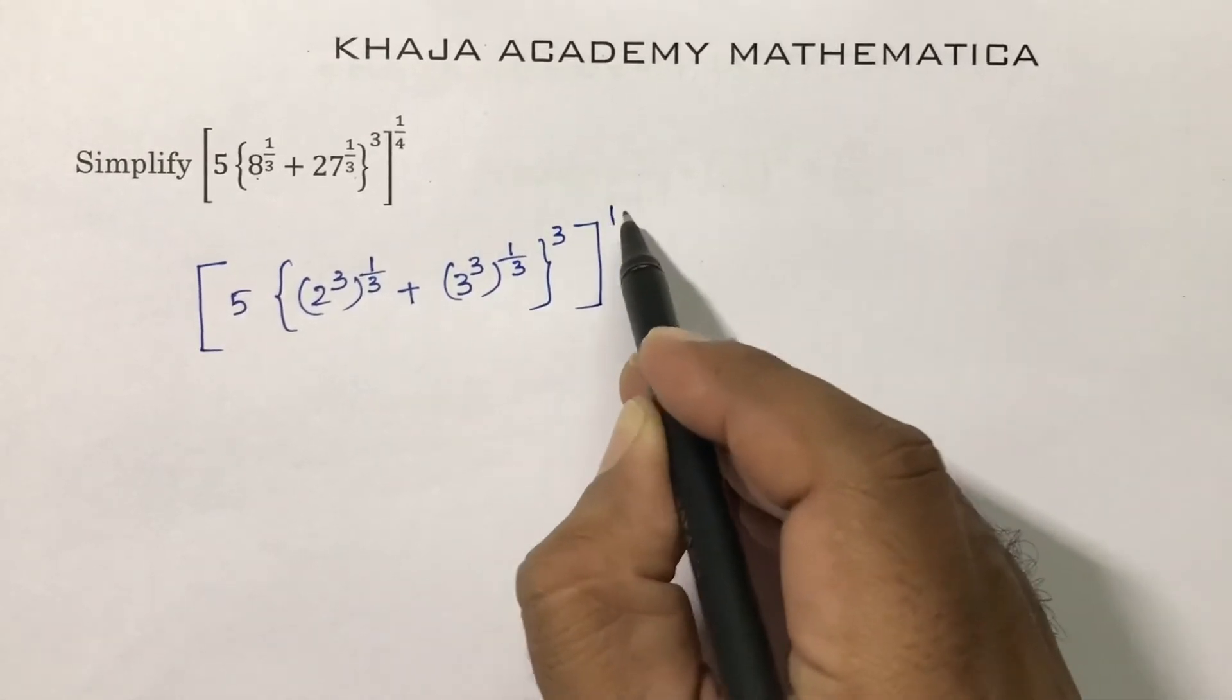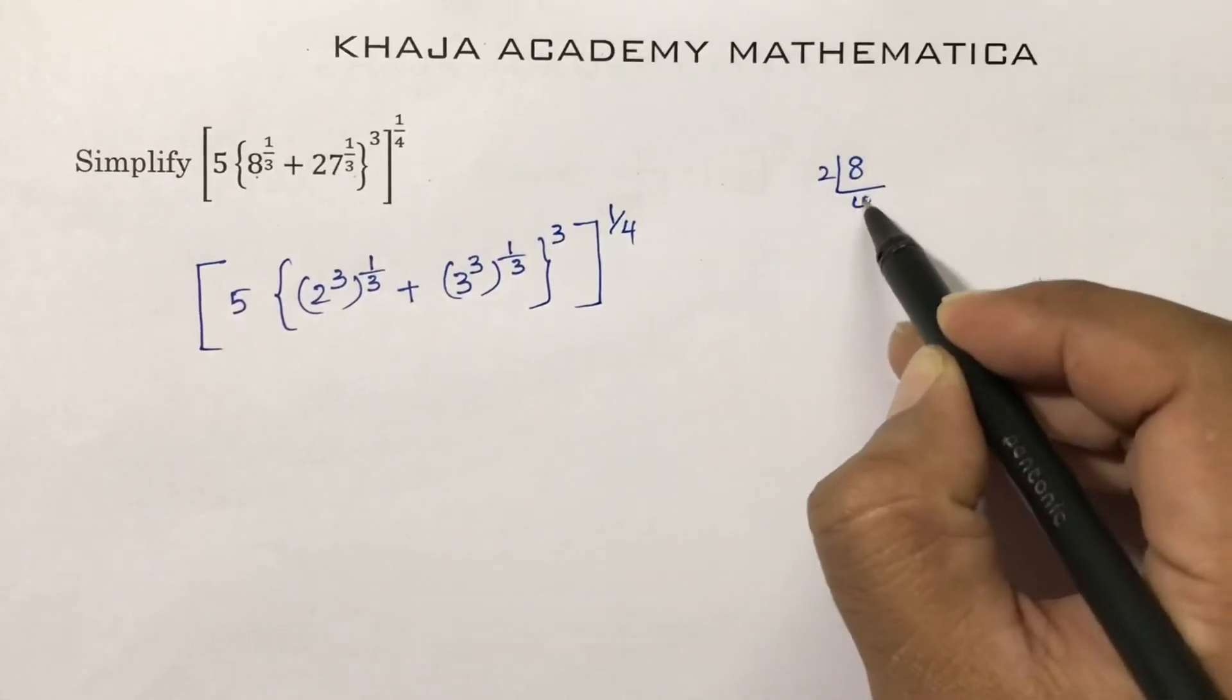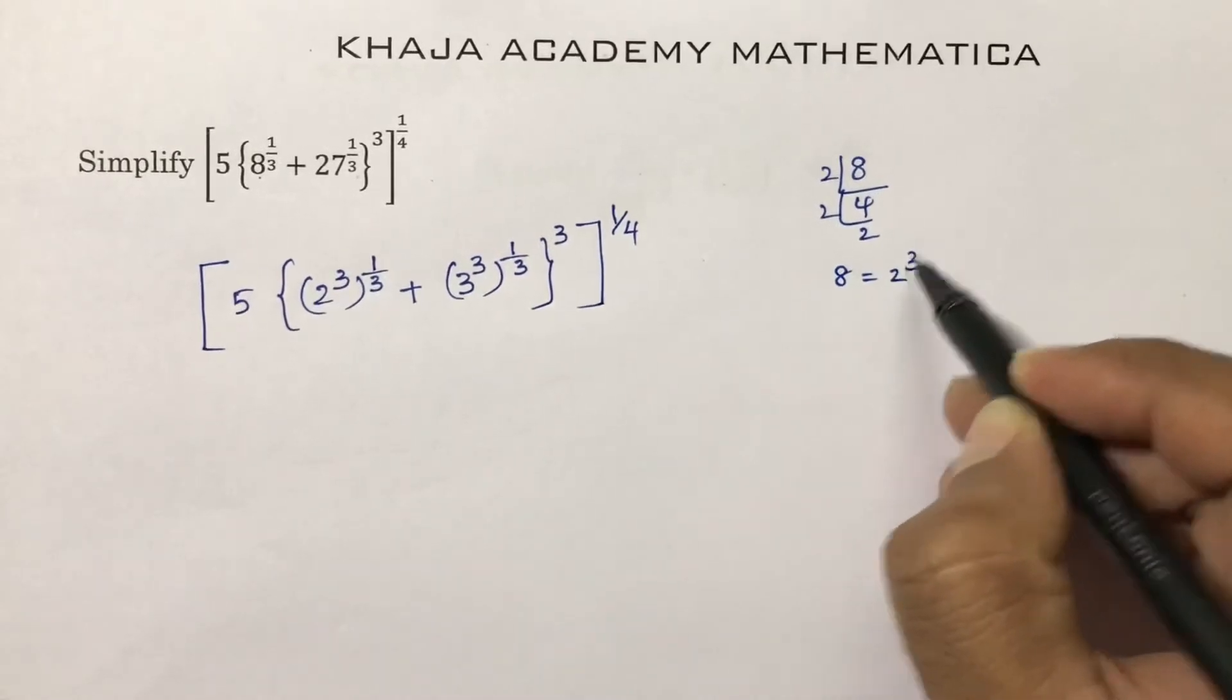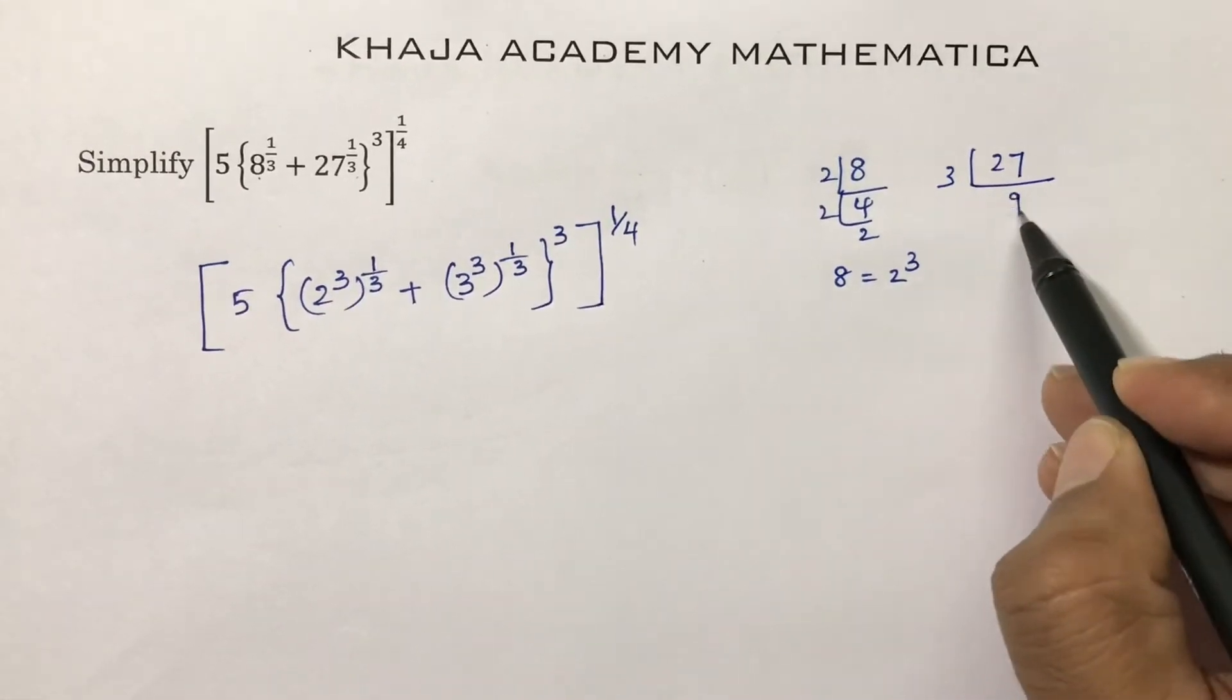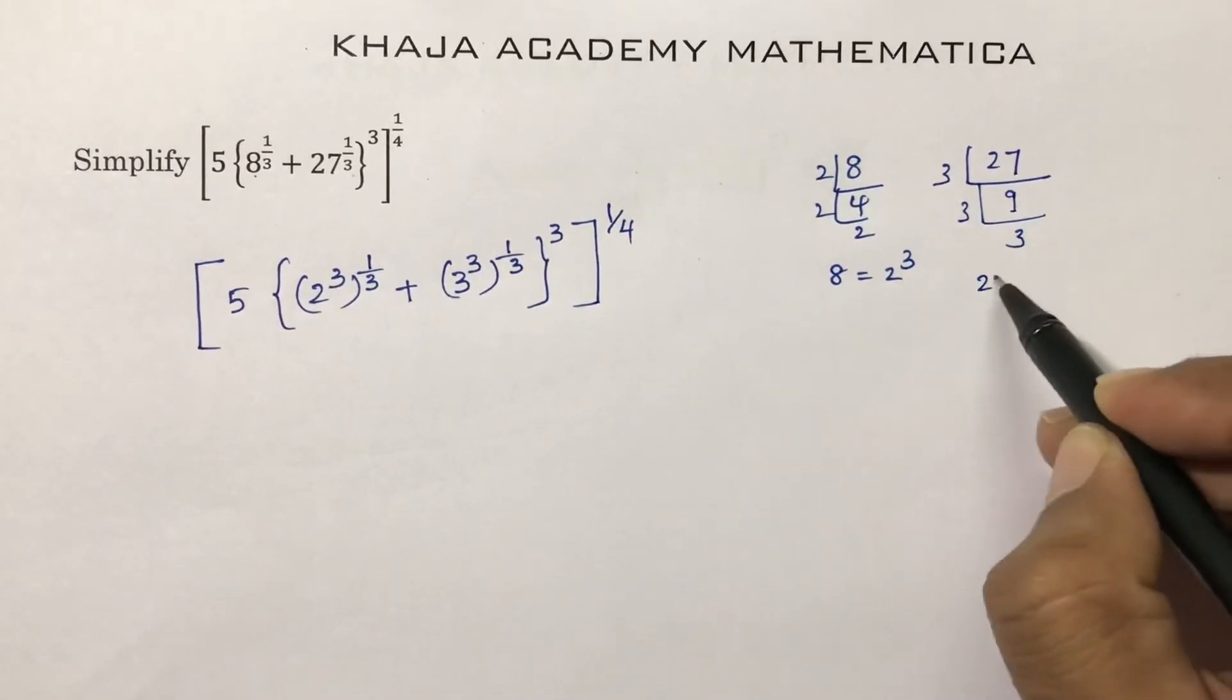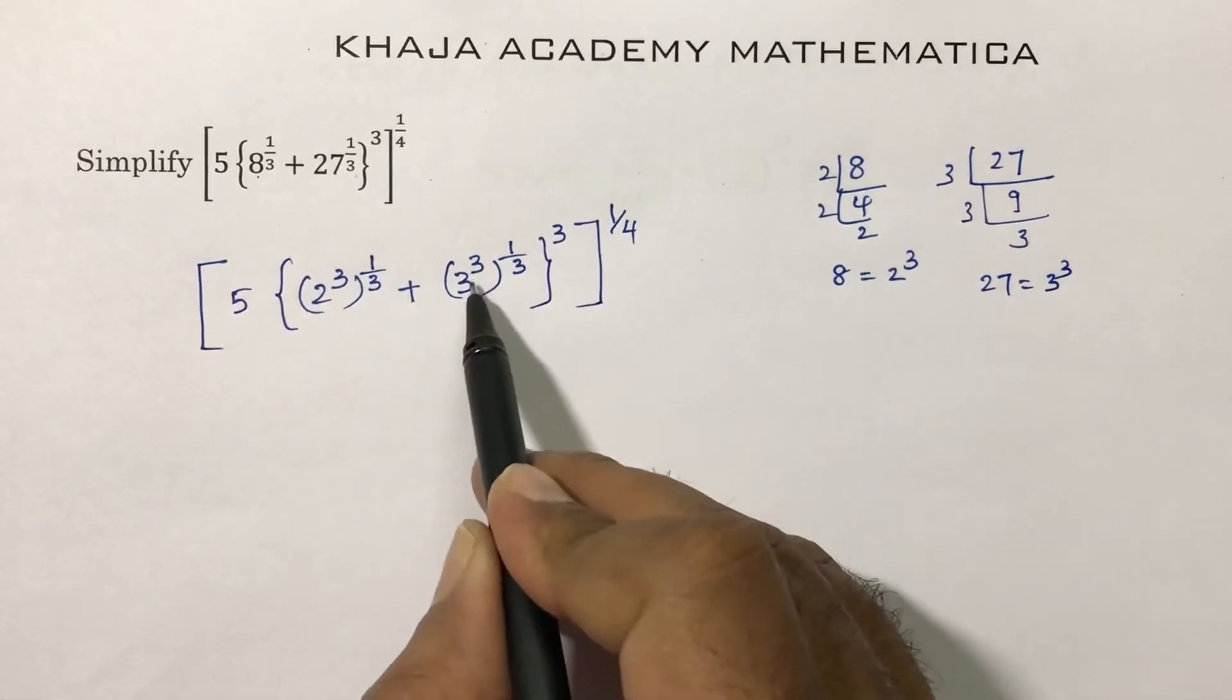See, 8 if you do prime factorization, you can write as 2 cube. In the same way, 27 if you do prime factorization, you can write as 3 cube. So I wrote 8 as 2 cube, 27 as 3 cube.